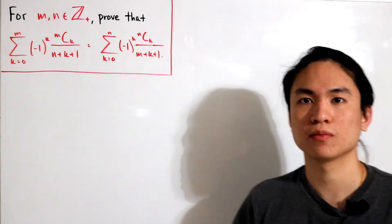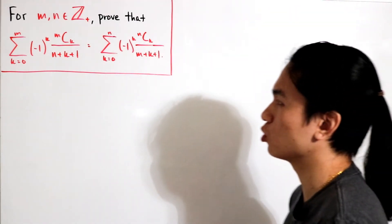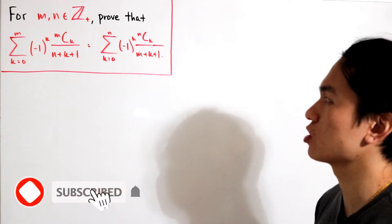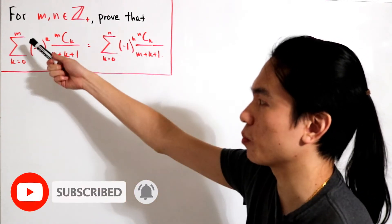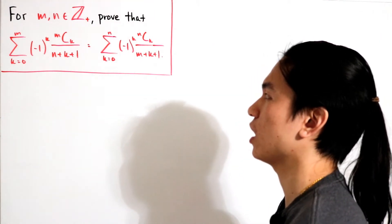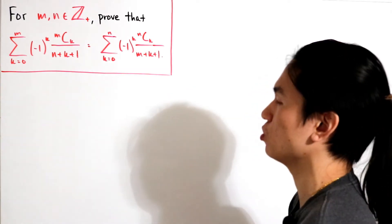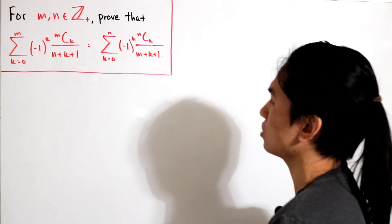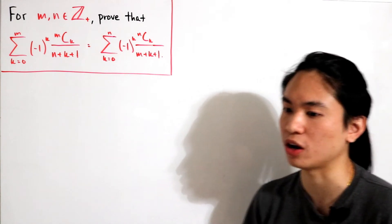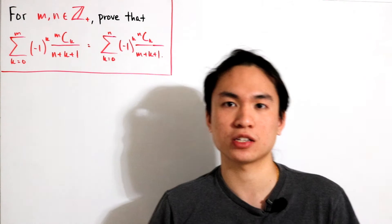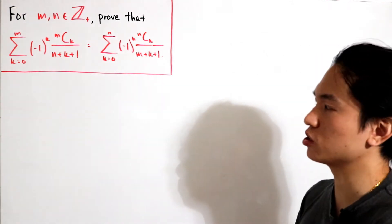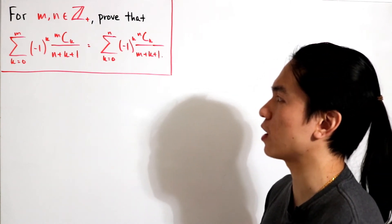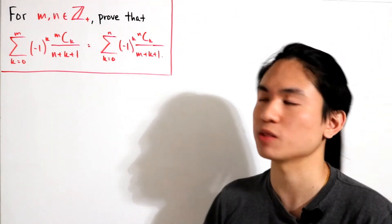Welcome back. Today we have a nice combinatorics proof. For positive integers m and n, we want to show that the partial sum with upper index m of (-1)^k * C(m,k) / (n+k+1) equals the partial sum with upper index n of (-1)^k * C(n,k) / (m+k+1). These involve binomial coefficients, which appear commonly in combinatorics problems, and we need to show the two sums are equal.